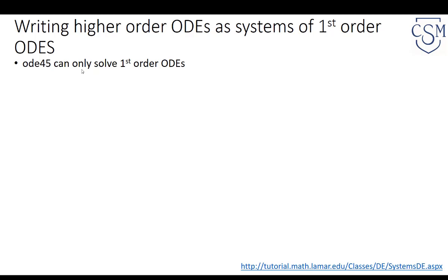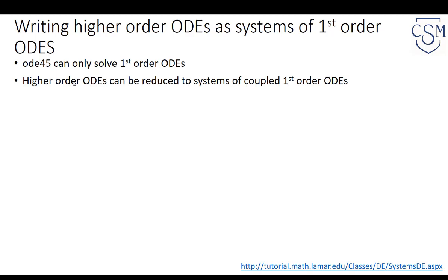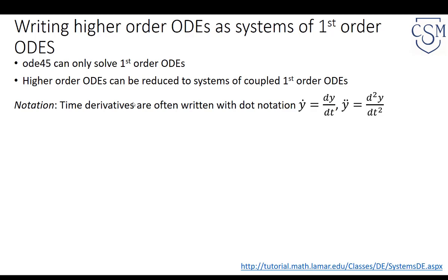With ODE45, we are limited to solving only first-order ODEs. However, you are familiar with many higher-order ODEs, such as a second-order ODE like F = MA — that is, mass times the second derivative of position. Higher-order differential equations can be reduced to systems of coupled first-order ODEs. When the independent variable is time, we typically use dot notation: Y-dot for the first derivative and Y-double-dot for the second derivative of Y with respect to time.